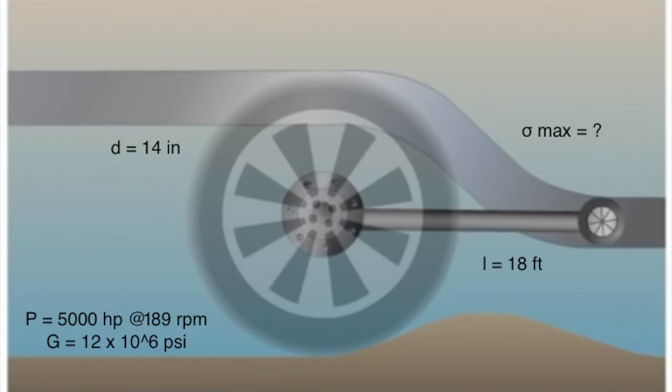We need to solve the maximum shearing stress at the torsion bar of the car that has 14-inch diameter and 18 feet long and used to transmit 5000 horsepower at 189 RPM with the G that is equal to 12 times 10 raised to 6 PSI.